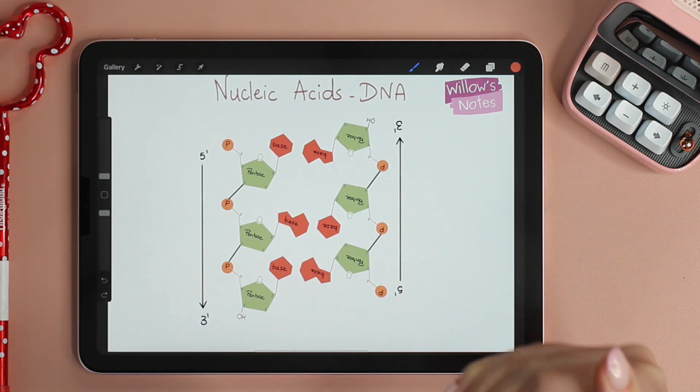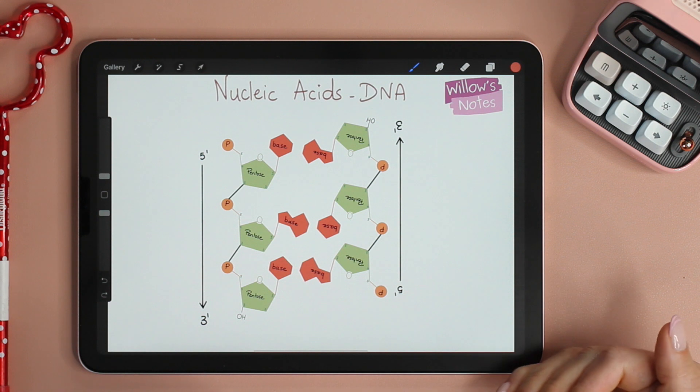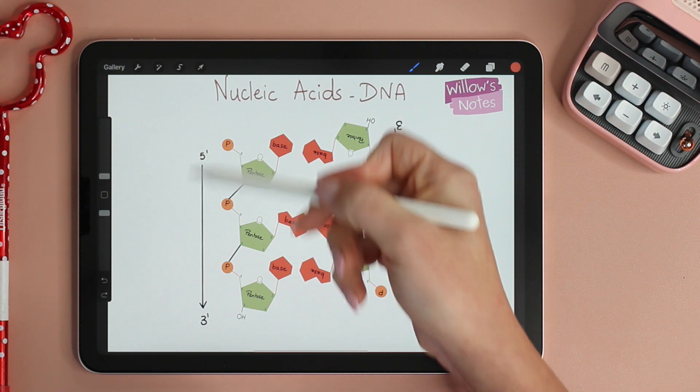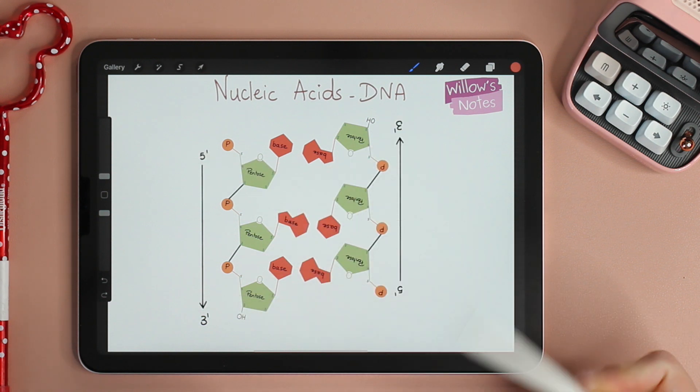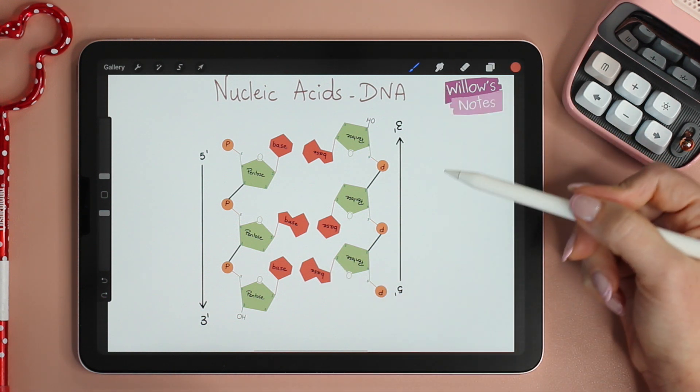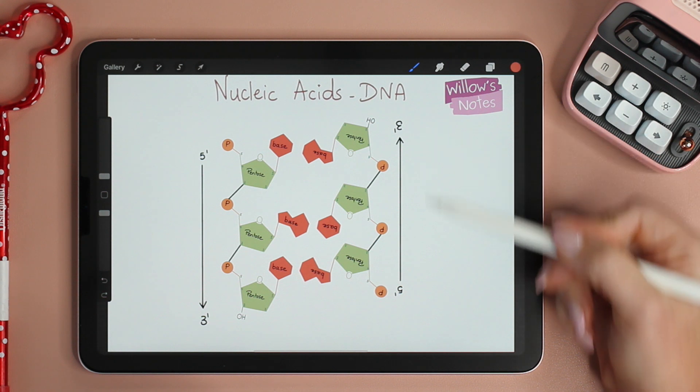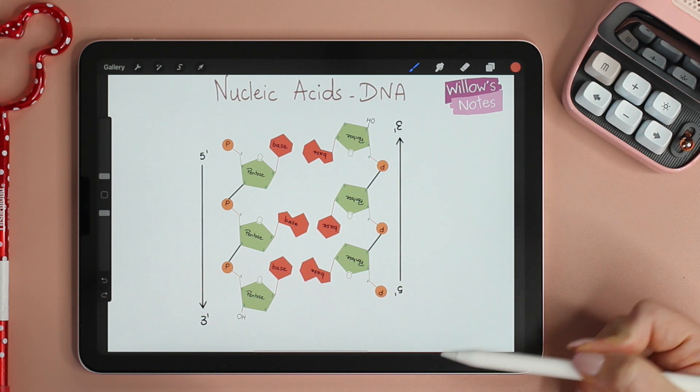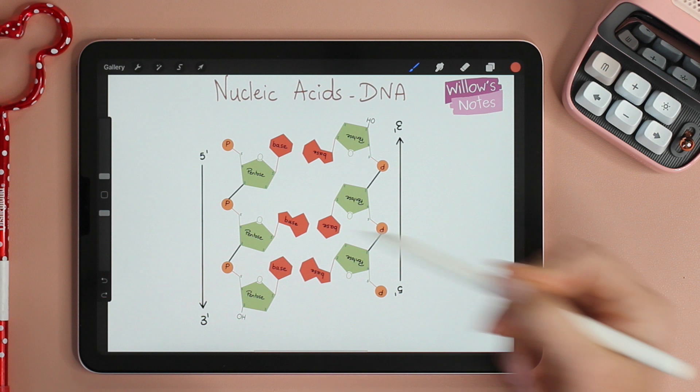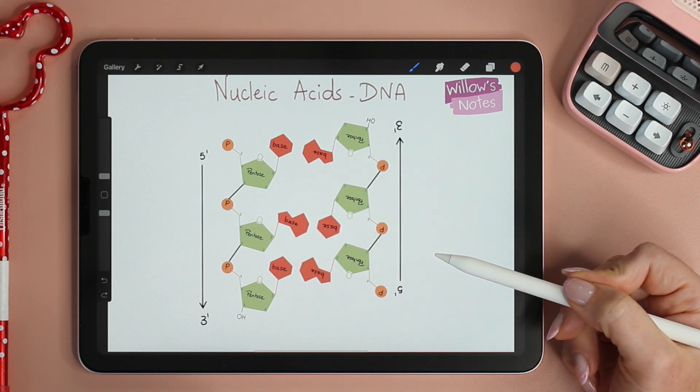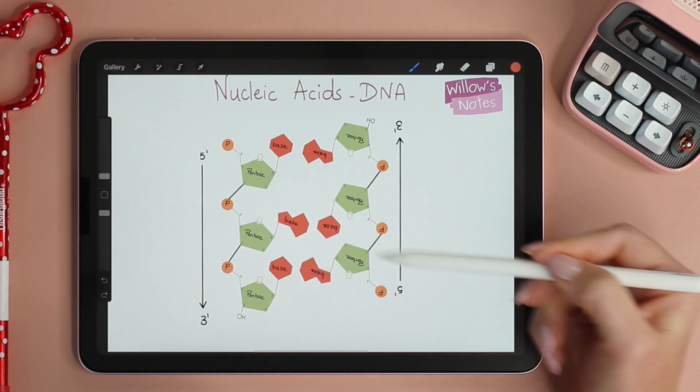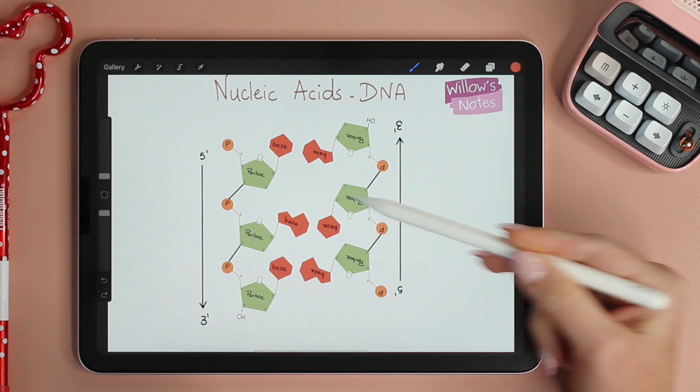Now look at the direction of the complementary strand. Unlike the five prime to three prime direction, because we took this strand and turned it 180 degrees, we can see that it's going from three prime to five prime direction. Everything is upside down compared to the complementary strand. And this is why we say that the DNA strands are anti-parallel.